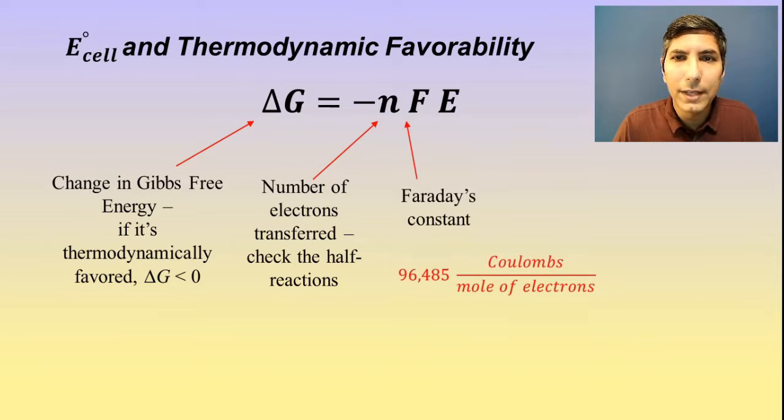Now F is a constant called Faraday's constant, and we're going to use that in several of the next lessons. Faraday's constant is equal to 96,485 coulombs per mole of electrons. This is a number that's given to you on the AP exam, but it is nice to know.